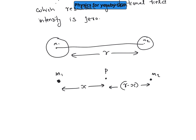At point P, the gravitational field due to m1 is g1 vector acting towards the left, and because of m2 there is a gravitational field g2 vector also acting towards the left. If their magnitudes are equal, then the net gravitational field at point P will be zero. So we can say that Gm1 divided by x squared should be equal to Gm2 divided by (r minus x) squared.